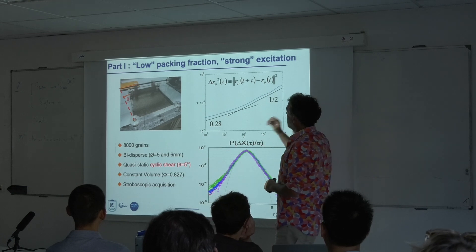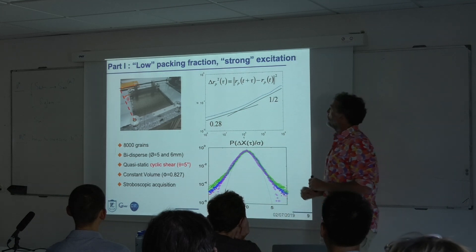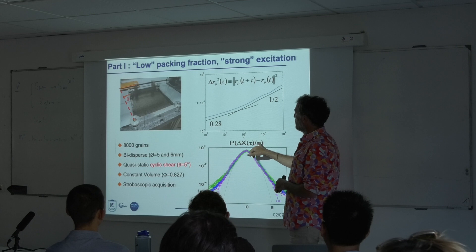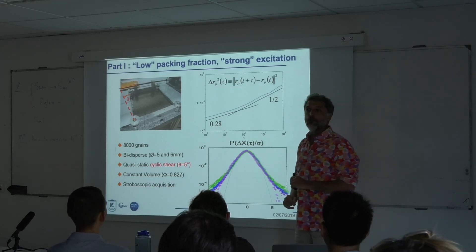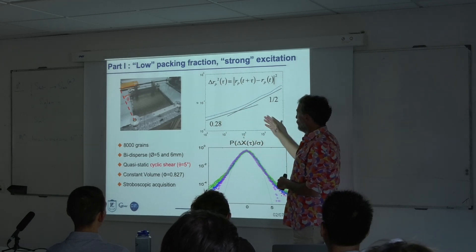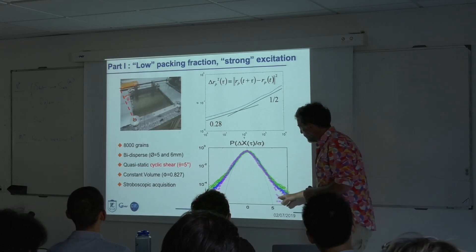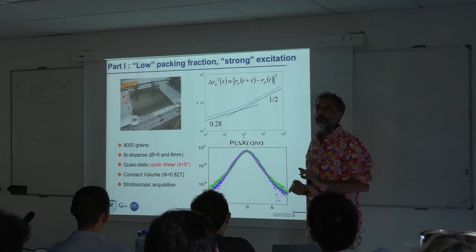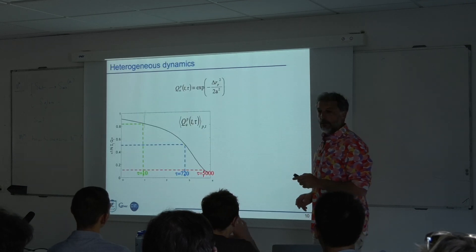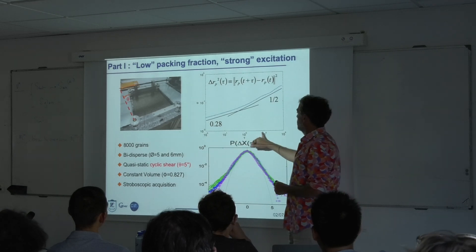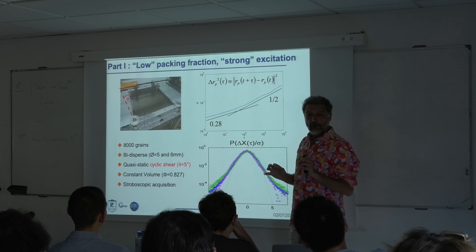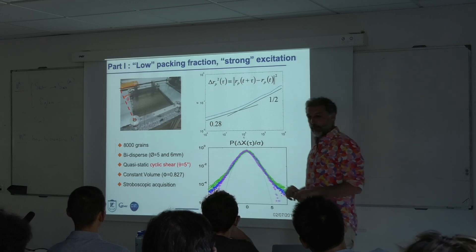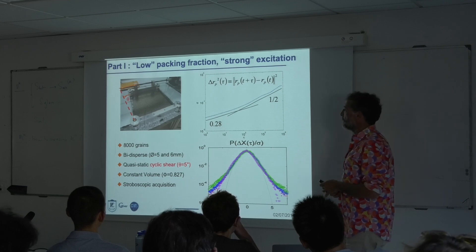When you do this and measure the mean square displacement, you see that at long time it is diffusive as expected, but at intermediate time there is a sub-diffusive regime. If you look at the distributions of displacement rescaled by their average value, the distributions are not Gaussian — and it is really hard for them to become Gaussian even when you increase the lag time. There are non-trivial dynamics. The shear itself is quasi-static — zero frequency limit — so there is no inertia, it's a fully overdamped system.